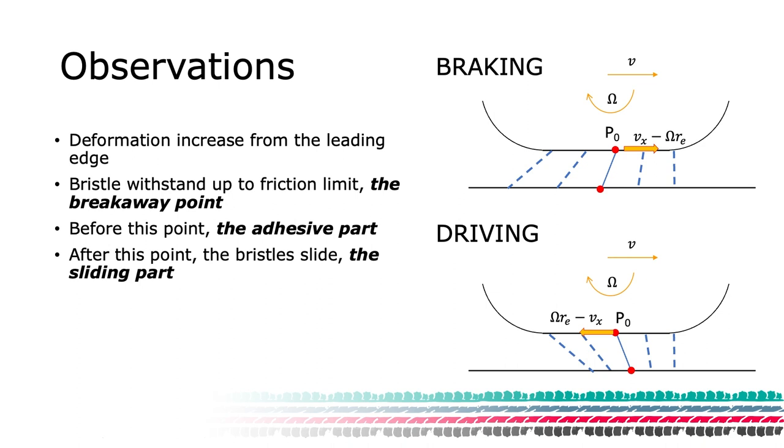After the breakaway point, we know that the shear stress is so large that the bristles are sliding. Consequently, we call this the sliding part of the contact.